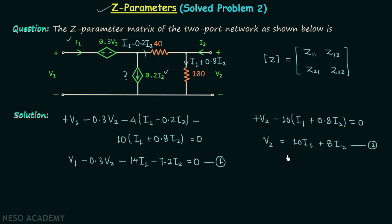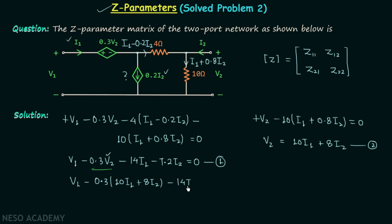Equation 2 is already in standard form, but equation 1 is not because it contains 0.3·V2. To get standard form, we substitute V2 = 10·I1 plus 8·I2 into equation 1: V1 minus 0.3·(10·I1 plus 8·I2) minus 14·I1 minus 7.2·I2 equals 0, which simplifies to V1 equals 17·I1 plus 9.6·I2. We call this equation number 3.